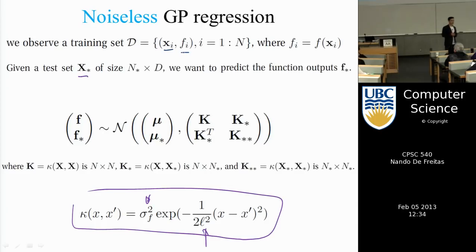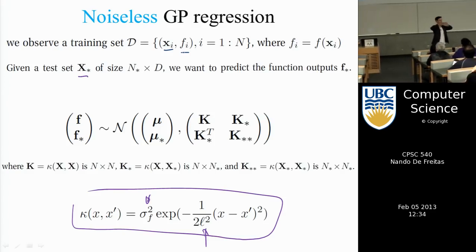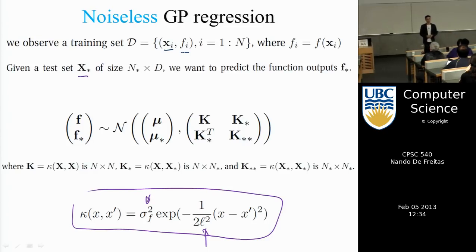That function could be, for example, someone's preference for different countries in the world. I could ask questions like: do you prefer Brazil to Canada? No. Do you prefer the UK to France? Yes. Do you prefer Korea to Japan? No. By doing this, I would be able to learn a GP that describes his preference — a GP that's 3D, over the globe, which you could map to 2D to give preferences over countries.